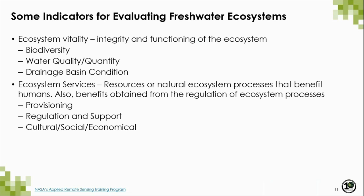Most of the world's water is in the ocean and not in freshwater ecosystems. In fact, less than 1% of freshwater is accessible for human use. It is estimated that 80% of the world's human population is threatened with insufficient water quantity or quality. Furthermore, it is estimated that by 2030, our planet's needs for water would outpace its reliable supply by 40%. Two very important indicators for assessing the health of freshwater systems are ecosystem vitality and ecosystem services. Indicators for ecosystem vitality include biodiversity, water quality and quantity, and drainage basin conditions. Ecosystem services include provisioning, regulation and support, and cultural, social, and economical services.